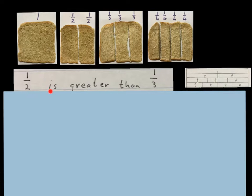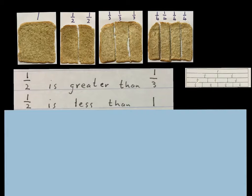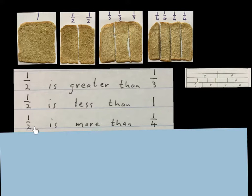The first statement is: a half is greater than a third. So the half is bigger than the third — comparing them. Since grade one, a child was taught what is greater, what is less, what is more than — we are just doing it with fractions now. The next one says: a half is less than one. So this half here is definitely less than the whole one. The next statement is: a half is more than a quarter. This half here is definitely more than the quarter.